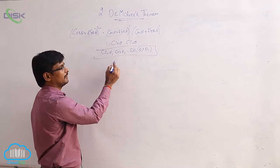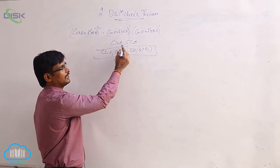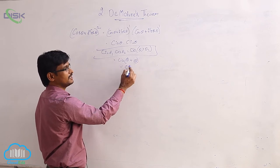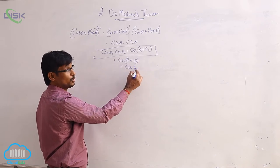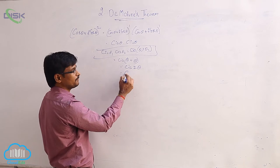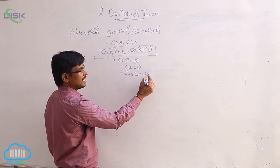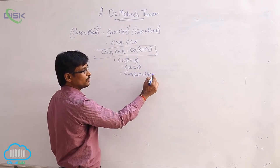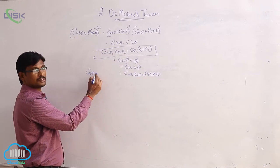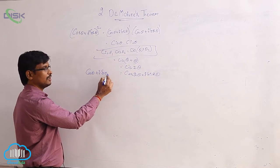Applying that property, we get cis of theta plus theta, which becomes cis 2 theta. Expanding cis 2 theta, it becomes cos 2 theta plus i sine 2 theta. This is the value of cos theta plus i sine theta whole square.